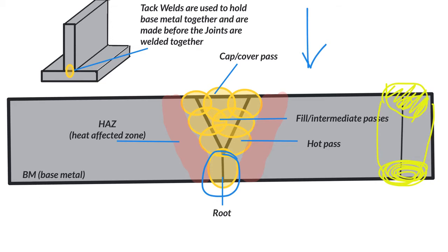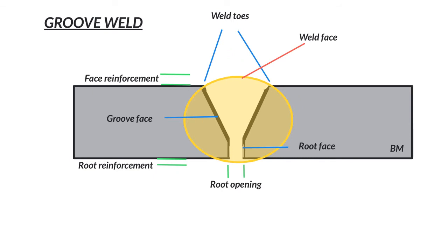Now we're going to specifically look at the parts of a groove weld. I drew this as a V-groove with a little bit of a root face. Two pieces, and I show it as one big bead — whether it's one bead or several, maybe a root, a fill, and a cap. These all can apply.